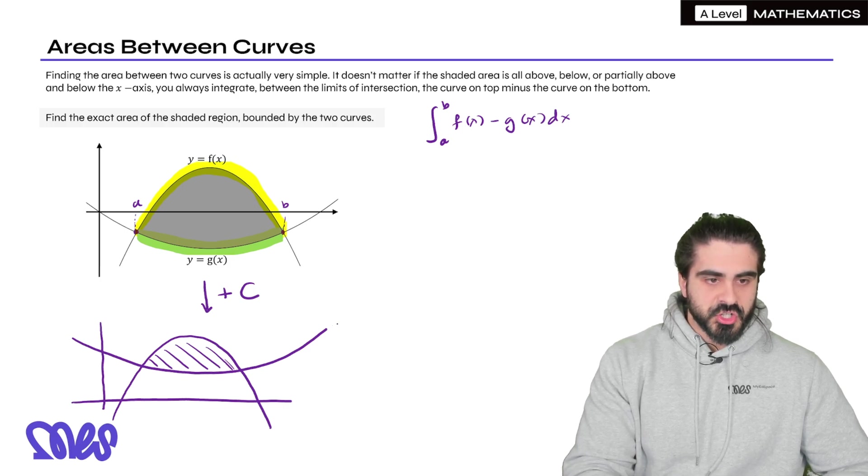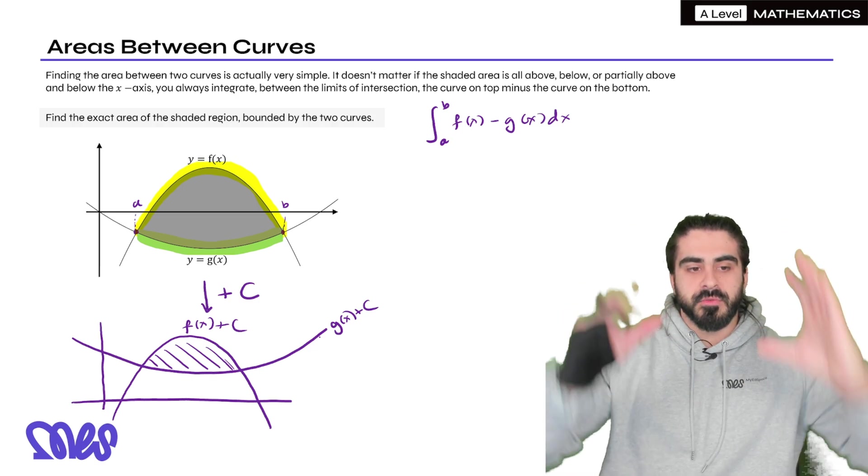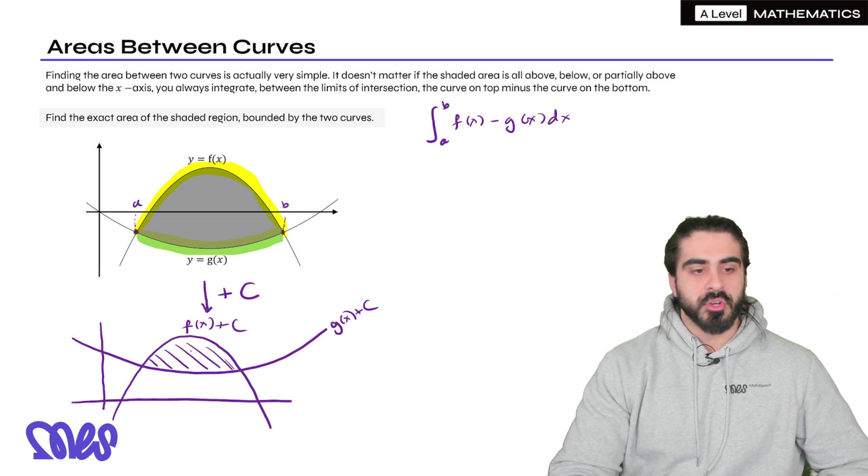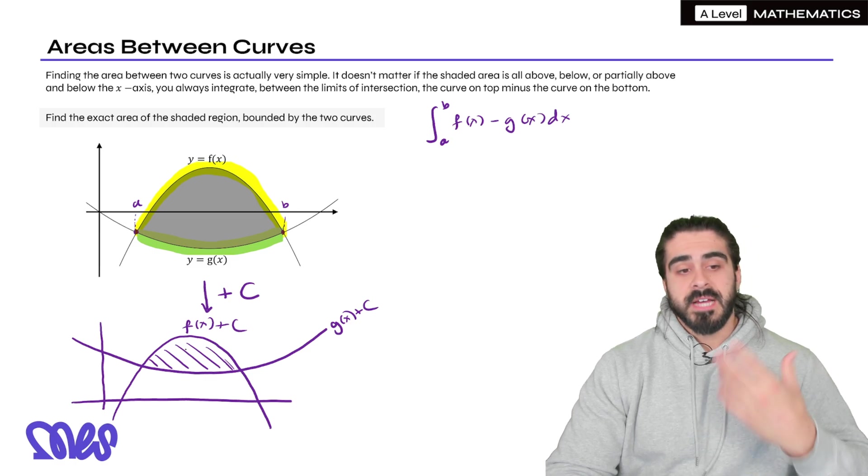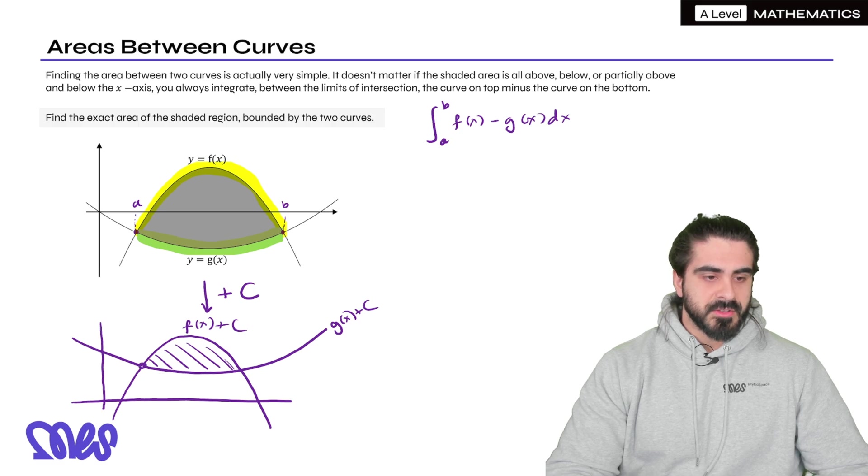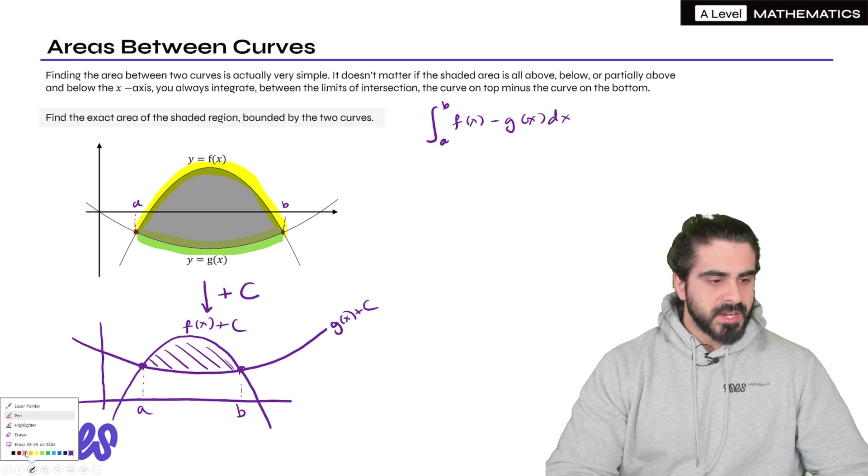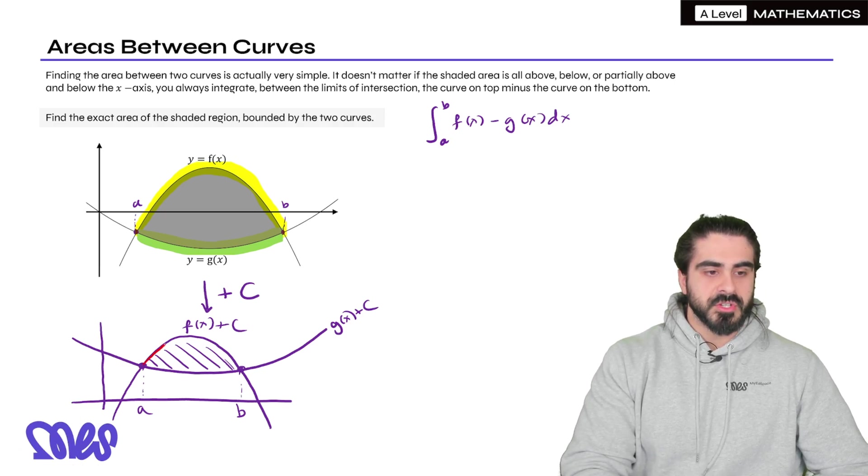This function here will be g(x) + c and this function here will be f(x) + c. All I've done is shifted both graphs up by c. Now the question might now is how do we find this area? Well what we would first do is we would find out the limits, the beginning and the end. That's obvious.